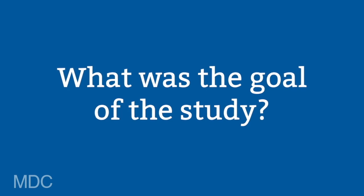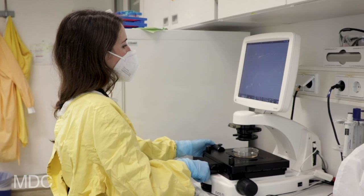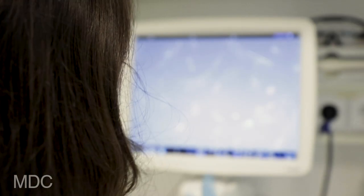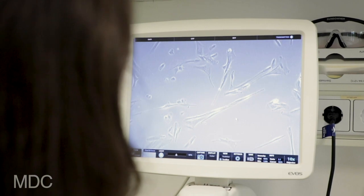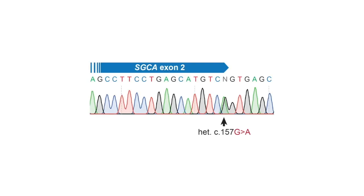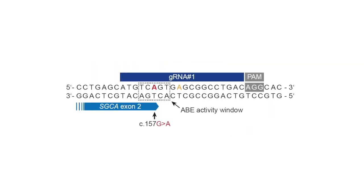In this study we obtained primary human muscle stem cells from a patient affected by a genetic muscle disease called limb girdle muscular dystrophy type 2D or type R3. The patient has a mutation in a gene called alpha-sarcoglycan. We saw that this mutation was a very good candidate for a method called adenine base editing, and we aimed to correct this mutation using CRISPR-Cas9-based methods in the muscle stem cells from the patient.